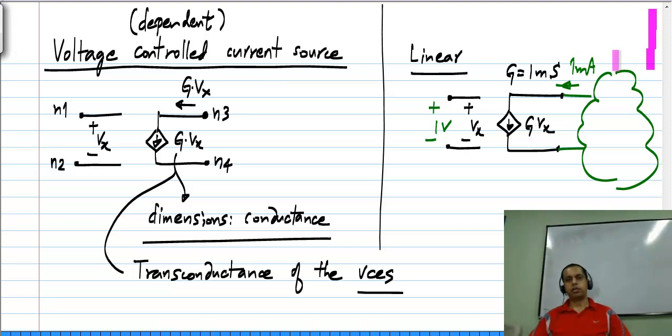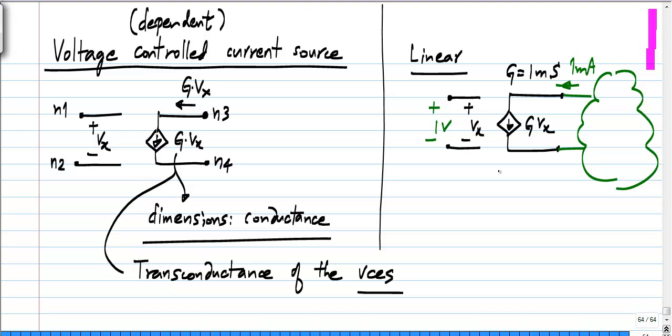Again, this voltage controlled current source does not correspond to a physical element like a resistor, but it is a model for something. It turns out that a voltage controlled current source is a good model for many active devices such as the transistor. We will not be discussing that here, but later when you come to transistors you will see that the behavior of the transistor under certain conditions is well modeled by a voltage controlled current source.